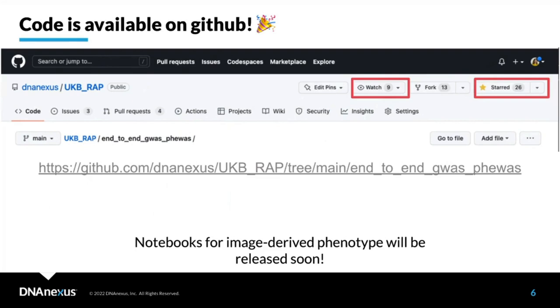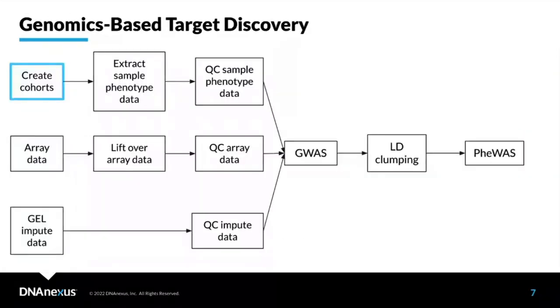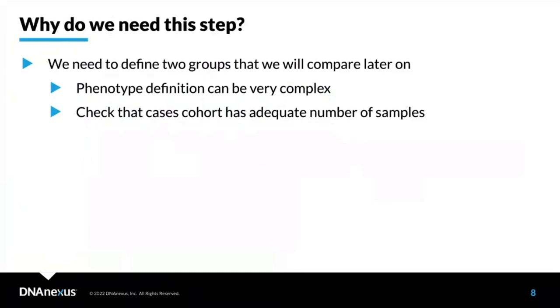Let's start with the first step: creating cohorts. We need this step because in GWAS and PheWAS we're comparing two different groups — cases and controls. The phenotype definition can sometimes be very complex, and you also need to check that you have adequate numbers of samples, because if you have too few samples you may need to redefine your phenotype definition to create larger cohorts.